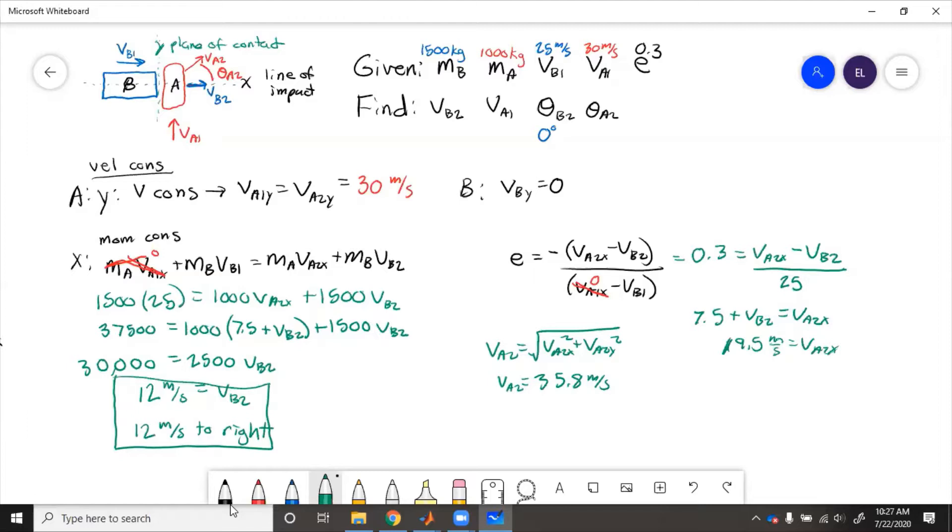Well, the angle is proportional to the X and the Y components. So theta2 equals tan inverse of VA2Y over VA2X. Okay, because we have VA2Y, VA2X, VA2, that's theta. So this equals 78.7 degrees. So VA2 is 35.8 meters per second at 78.7 degrees.